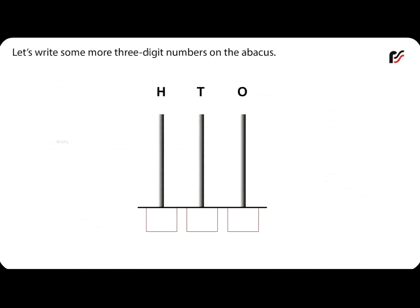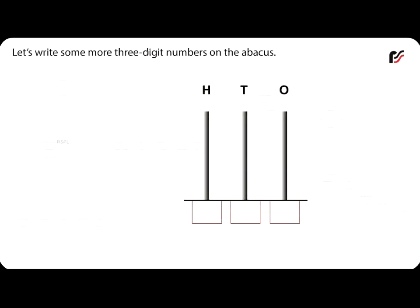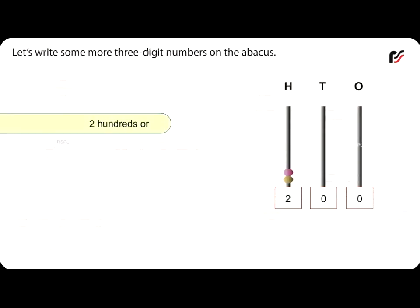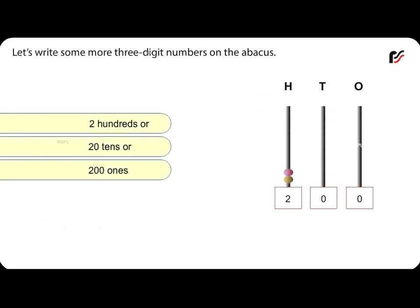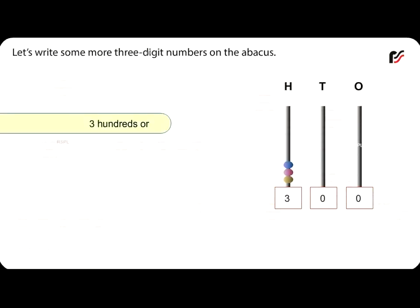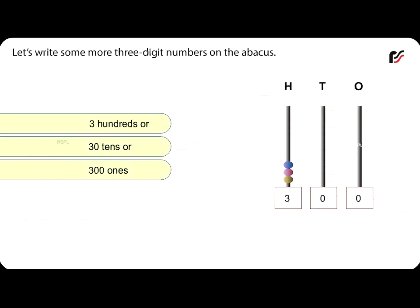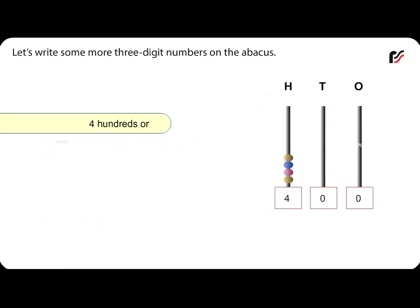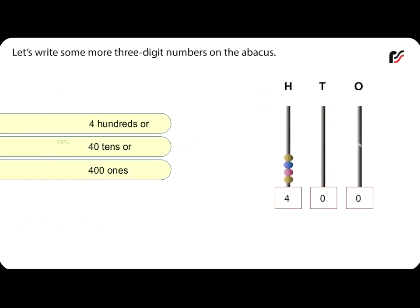Let's write some more three-digit numbers on the abacus. Two hundreds, or twenty tens, or two hundred ones. Three hundreds, or thirty tens, or three hundred ones. Four hundreds, or forty tens, or four hundred ones.